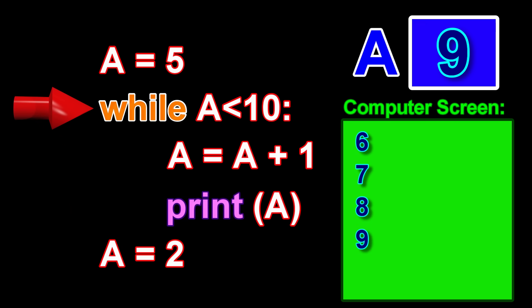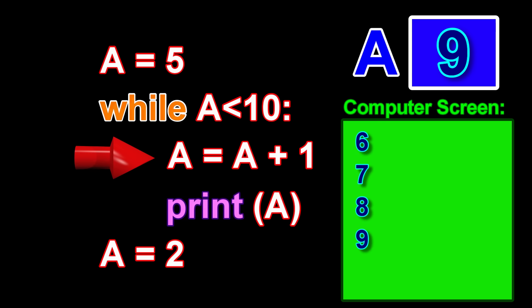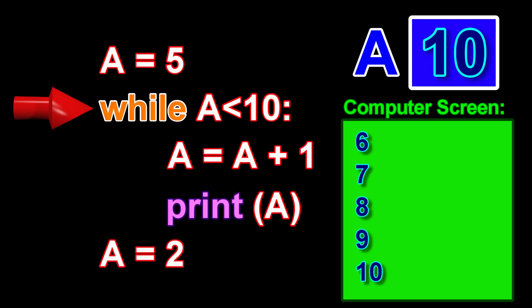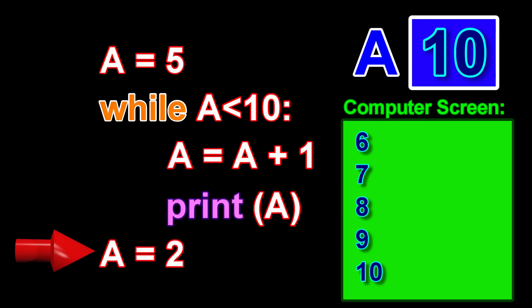Let's consider what happens on our fifth time around the loop. The statement a equals a plus 1 changes the value for the variable a from 9 to 10. The statement print a displays 10 on the computer monitor. We have now reached the end of the loop and are therefore taken back to the beginning, where we check if the present value for the variable a is less than 10. Since 10 is not less than 10, the computer program exits the loop and continues on with the rest of the program. When we run this program from the beginning, the following is what we will see displayed on the computer monitor.